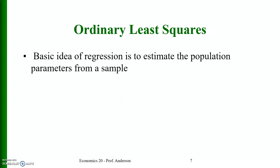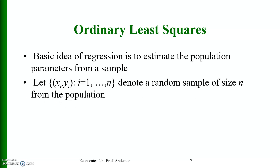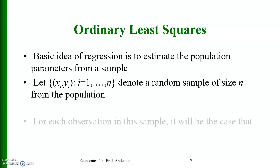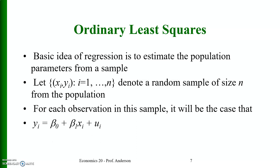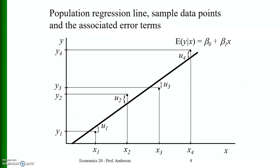The basic idea of regression is to estimate the population parameters from a sample — here, beta naught and beta_1. Let (x_i, y_i) be an ordered pair where i varies from 1 to n, denoting a random sample of size n from the population. For each observation, y_i = beta naught + beta_1 * x_i + u_i. The figure shows the population regression line, sample data points, and associated error terms.